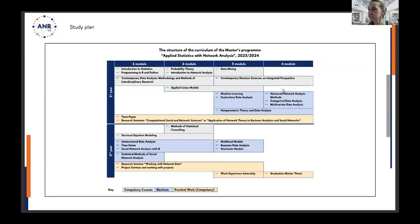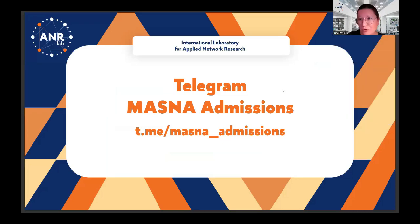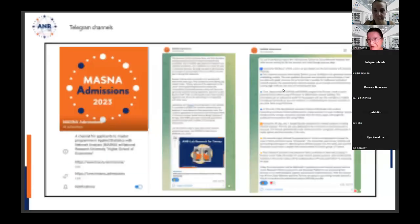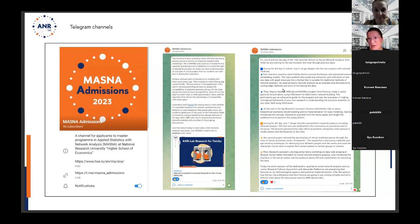Just a reminder: we have a Telegram channel, MASNA Admissions, in English. Some of you have already joined. We try to provide really high quality content — not only about the admission process, but also to inform about events and support interest in social network analysis. We also have another channel, Nodes and Links, in Russian, which is devoted more to content about the research area.